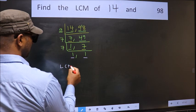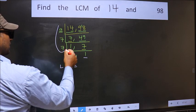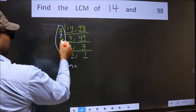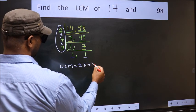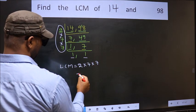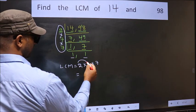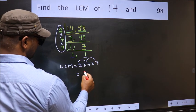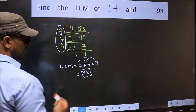So our LCM is the product of these numbers. That is 2 into 7 into 7. So let us multiply these numbers. 2 into 7 is 14, into 7 is 98. So 98 is our LCM.